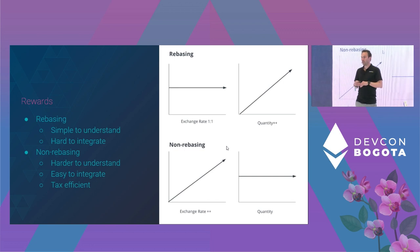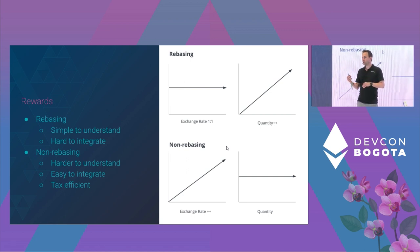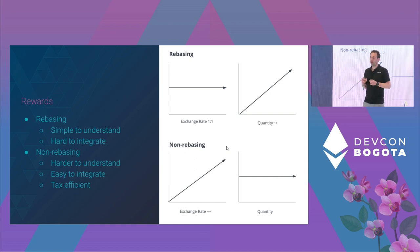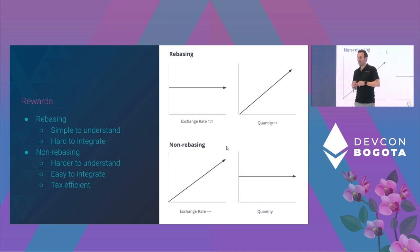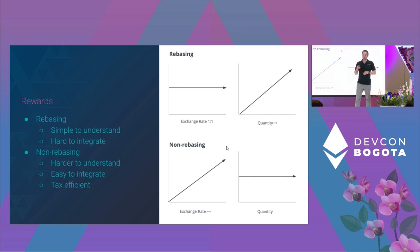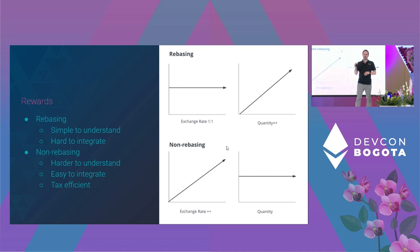With a rebasing token it's very simple to understand — you're literally getting more of the token. But it's extremely hard to integrate, because if the quantity is changing all the time that's not really compatible with most DeFi protocols. With a non-rebasing token it's harder to understand, and you'll spend most of your time explaining to people what a non-rebasing token is. But it is much easier to integrate — it's just a standard ERC20 supported by most DeFi protocols. A non-rebasing token is also more tax efficient depending on your jurisdiction. With a rebasing token you have a taxable event every single day, whereas with a non-rebasing token you have a taxable event when you stake and when you unstake.